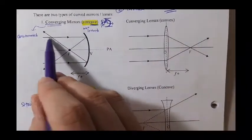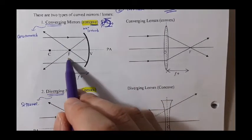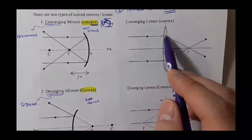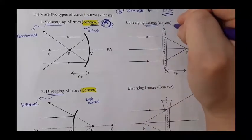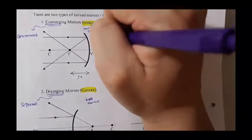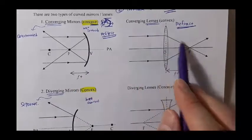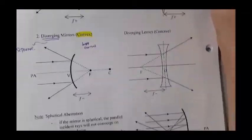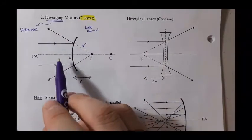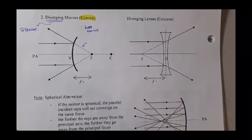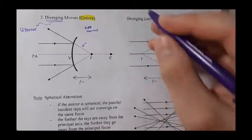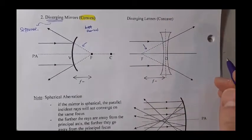When it comes to lenses, they do not reflect — they refract. You may notice solid lines that go through the focal point in converging situations. When it comes to a diverging situation, focus on the dotted line. It does go toward the focal point, but the dotted line is what you need to keep in mind. Same thing for diverging lenses — the ray goes away, but a dotted line connects back toward the focal point.